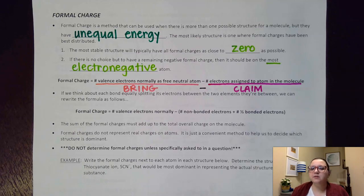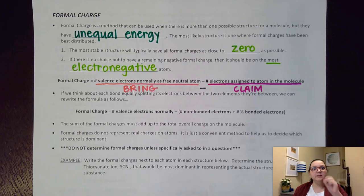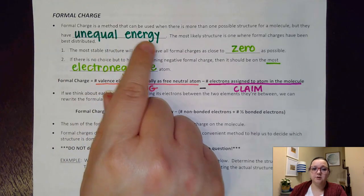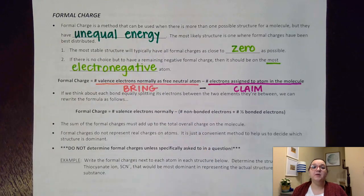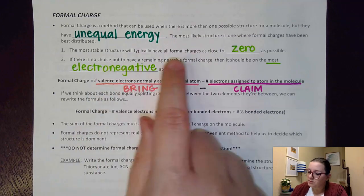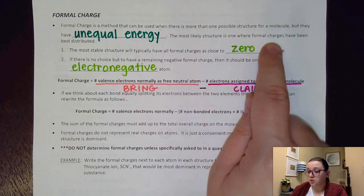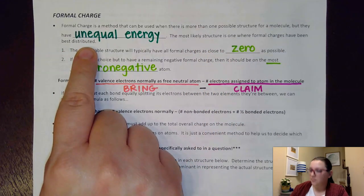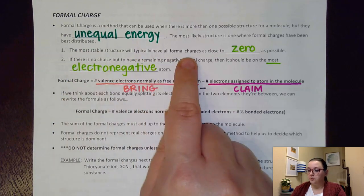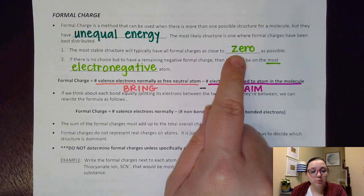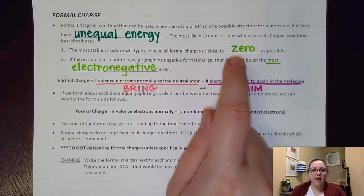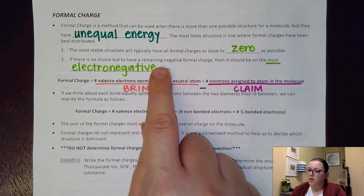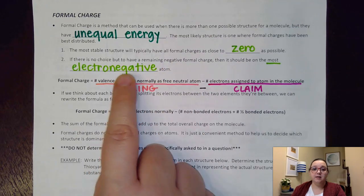This is going to be a little bit different than resonance structures. With resonance structures, all of the possibilities have equal energy. Here we're going to be presented with distinctly different structures that have unequal energy, and so what we're trying to do is pick the most energetically stable of those options. The most likely structure is one where formal charges have been best distributed — either as close to zero as possible, or if there is a remaining formal charge, on the most electronegative atom.